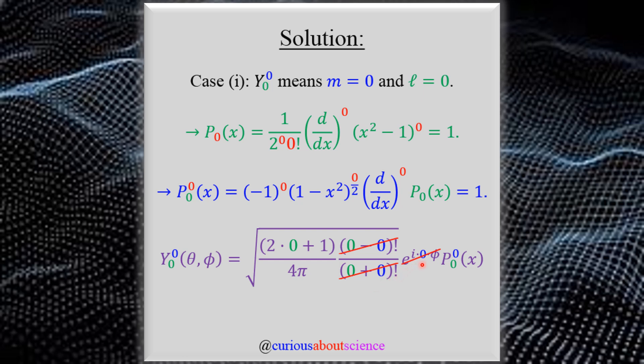E to the I times M, which is 0, times phi. Well, that's E to the 0, which is 1. Again, we can get rid of that. No biggie. That's not too bad, and we'll see how this tidies up soon.